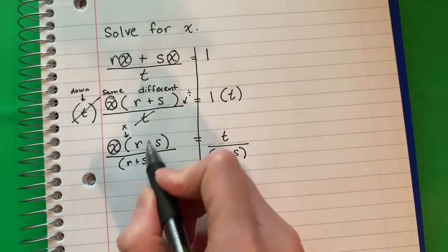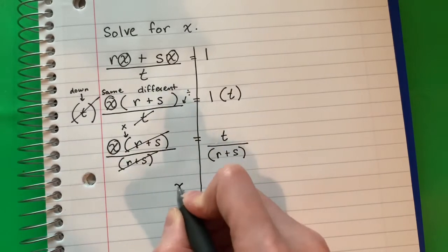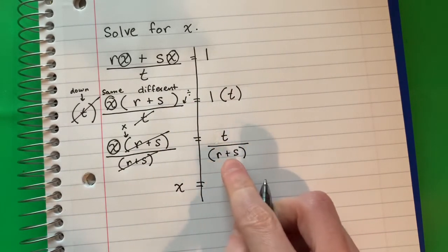R plus s divided by r plus s cancels. It's 1. And I will copy. X equals T divided by r plus s.